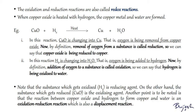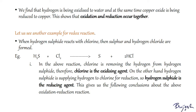So we find that hydrogen has been oxidized to water, and at the same time copper oxide has been reduced to copper. This shows that oxidation and reduction occur together; hence we call such reactions redox reactions. Note that H₂, the substance which gets oxidized, is the reducing agent, while copper oxide, the substance which gets reduced, is the oxidizing agent. This reaction is also a displacement reaction.